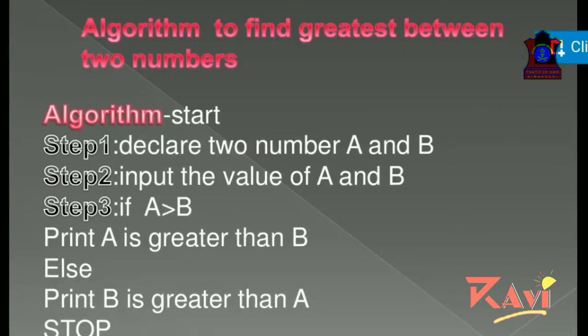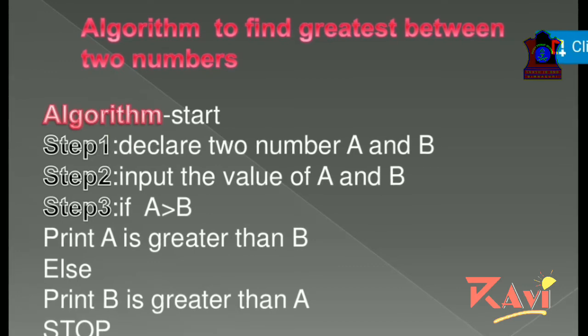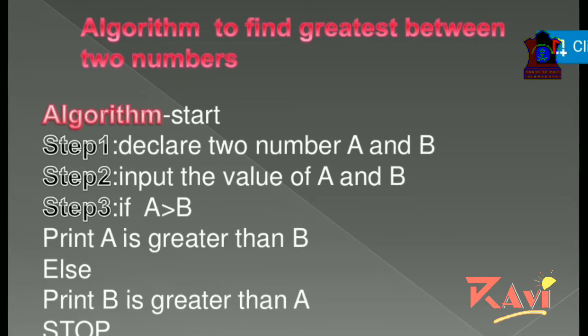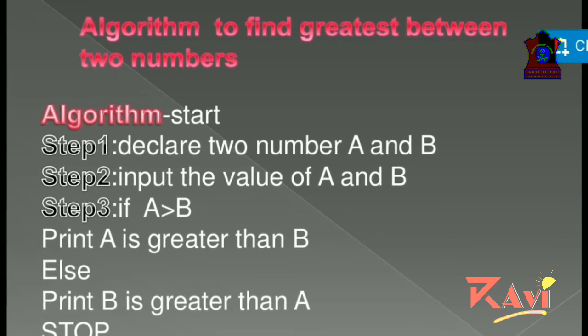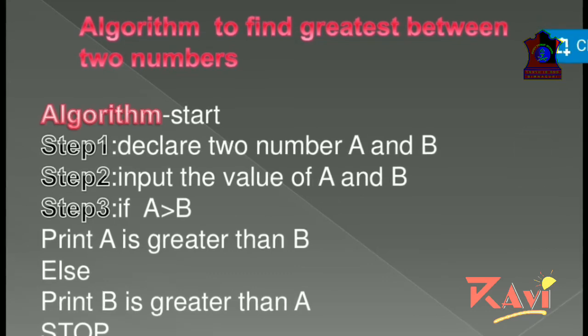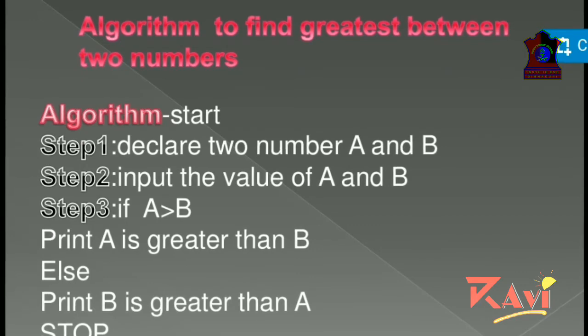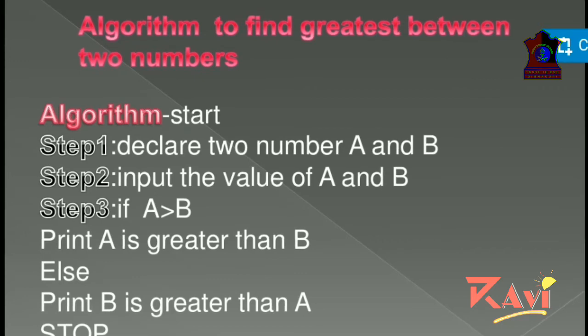Now one more, we have algorithm to find greatest between two numbers. Here we are doing the comparison. See here, algorithm first start, then step 1, declare two numbers a and b. Step 2, input the value of a and b. Step 3, if a greater than b, print a is greater than b, else if it is not there, then print b is greater than a, then stop.